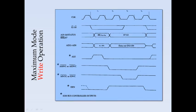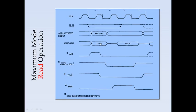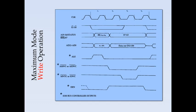For maximum mode write operation, the status signals are checked to confirm the bus master. The 8288 bus controller asserts ALE to latch the address, then issues the write command. Data is placed on the bus, and during T3 the I/O write or memory write command is given. An additional signal, the advanced memory write or advanced I/O write command, is issued by the bus controller one clock cycle in advance of the write command, so the peripheral can be ready to process the incoming data.